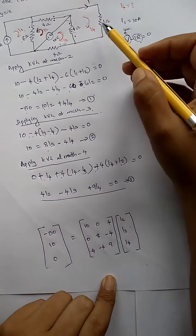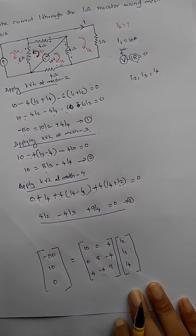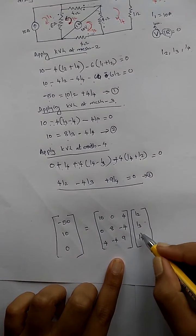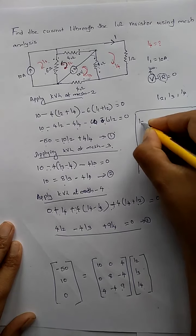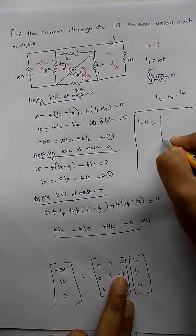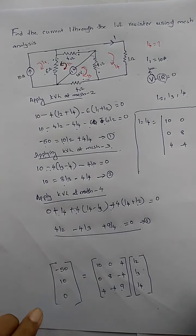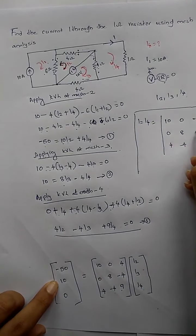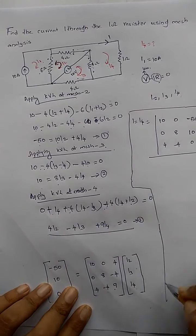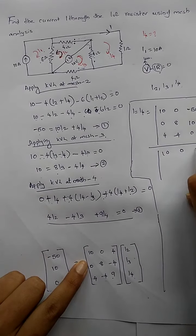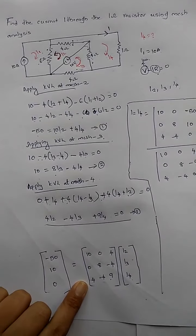We need to find the current through the 1-ohm resistor, which is I4. Using the matrix (Cramer's rule) method, to find I4 we replace the third column with the right-hand side vector. So the numerator determinant matrix has columns: [10, 0, 4], [0, 8, −4], and [−50, 10, 0]. This is divided by the determinant of the original coefficient matrix [10, 0, 4; 0, 8, −4; 4, −4, 9].